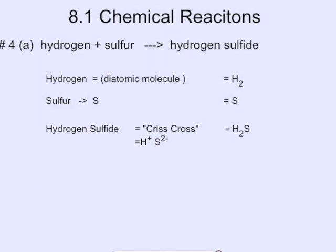Number 4. So now once again we're given words. We're going to convert the words to symbols. So hydrogen is a diatomic molecule. So it's H2. Sulfur in its pure state is simply S by itself. And then hydrogen sulfide. You're going to have to crisscross hydrogen sulfide. Hydrogen is a plus. Sulfur is two minus. So it's H2S. And so now it's just time to put it all together and write it out.